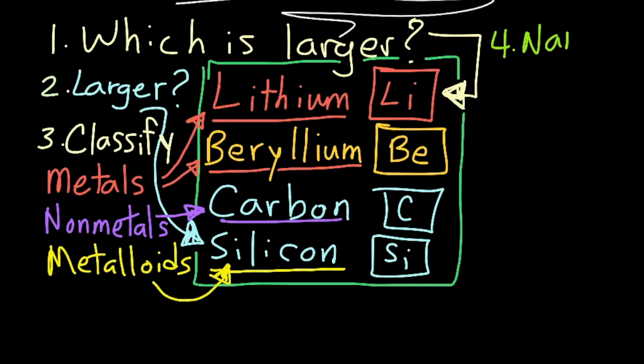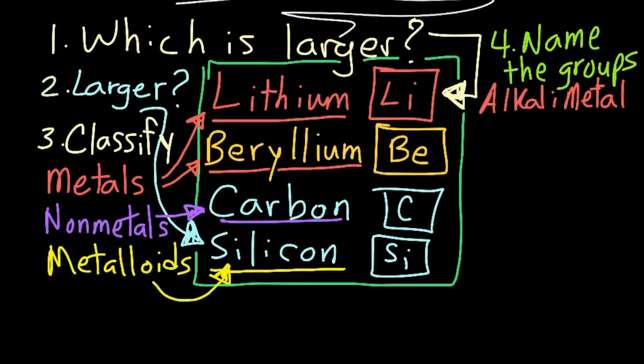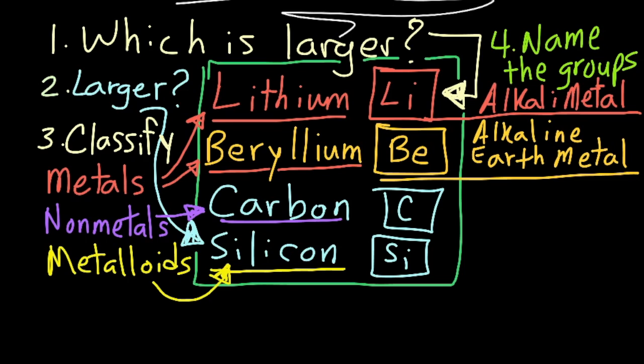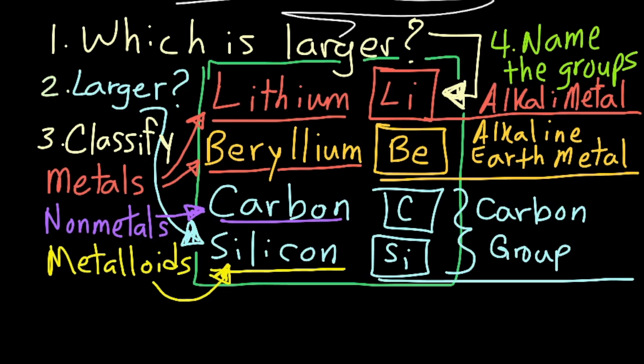Number four, can you name the groups each element belongs to? Lithium is an alkali metal, beryllium is an alkaline earth metal, and carbon and silicon are both members of the carbon group.